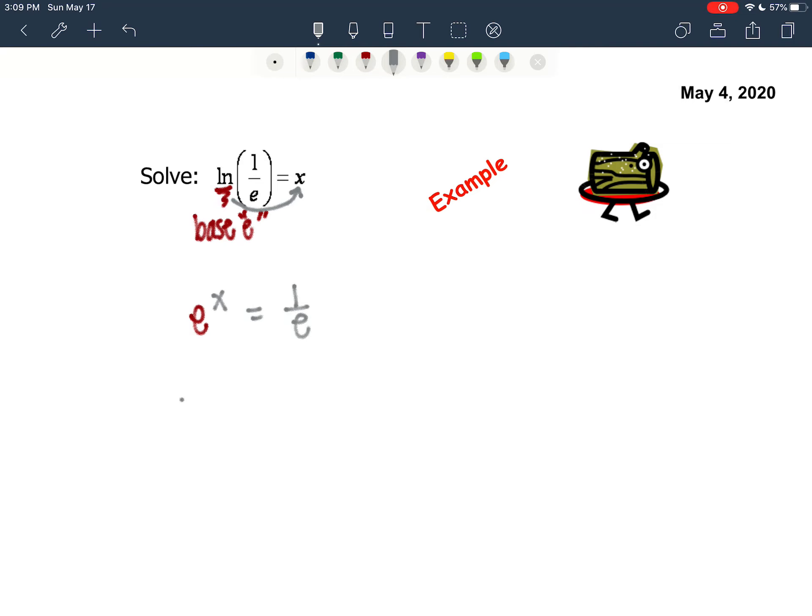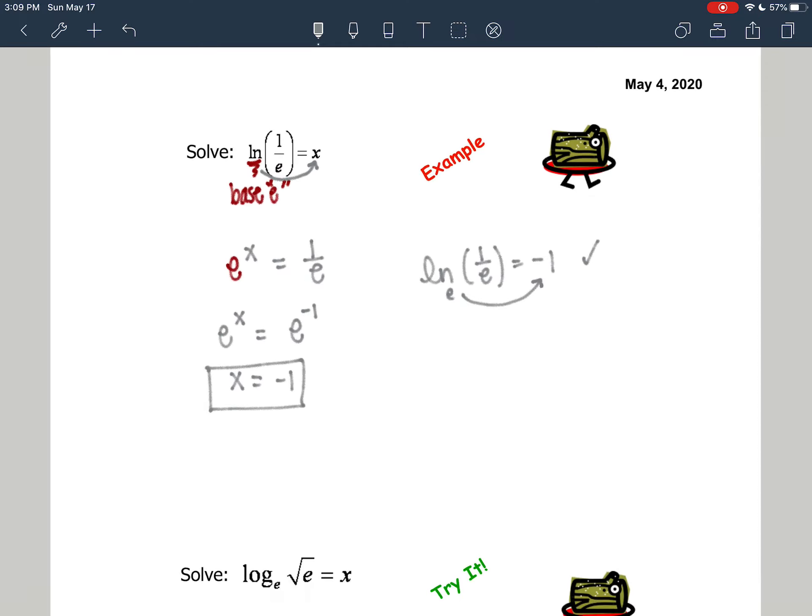Well, e to the x is a base e, and 1 over e is also a base e. It's e to the negative 1. Same base, set the exponents equal to x equals negative 1, and that is our answer. The natural log of 1 over e is equal to negative 1. That's because e raised to the negative 1 power is 1 over e. So we checked our answer, and we're good.